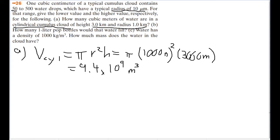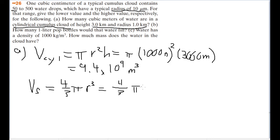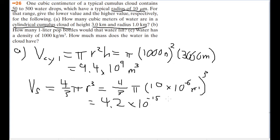We should also figure out the volume of a single water drop. Since we're given the radius, we can idealize all drops as perfect spheres. The volume of a sphere is V = (4/3)π r³. With radius 10 microns, or 10 times 10 to the negative sixth meters, cubed, the answer is about 4.2 times 10 to the negative fifteenth cubic meters.